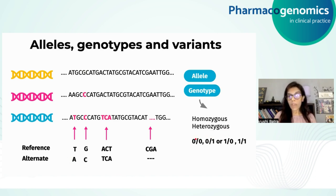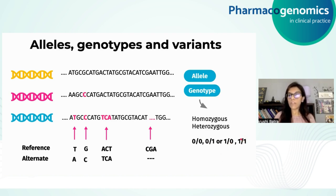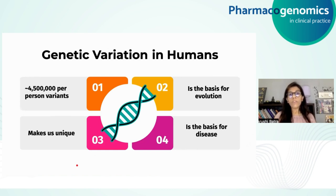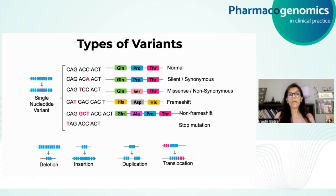When both alleles match the reference DNA, it is known as 0/0, or homozygous for the reference allele. If one allele is alternate, it is 0/1 or 1/0, known as heterozygous. If both are alternate, it is 1/1, homozygous for the alternate allele. These are the different genotypes that can be present in an individual with respect to mutations. Genetic variation in humans is responsible for our uniqueness and is also the basis for evolution and disease.